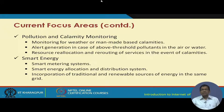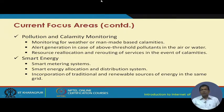Smart energy includes smart metering systems and programmable meters through which you can monitor differential usage at your homes and bill accordingly. In a smart grid or smart energy environment, there is smart energy allocation, distribution, and the incorporation of both traditional and renewable sources of energy in the same grid.